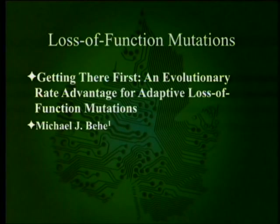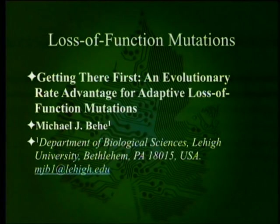We are in the theoretical molecular biology section, and our chapter today is "Getting There First: An Evolutionary Rate Advantage for Adaptive Loss of Function Mutations." It is written by Michael Behe, who many of you know, at Lehigh University.